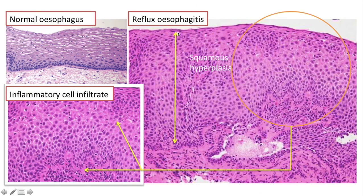Microscopically, reflux esophagitis shows squamous hyperplasia — thickening of the epithelium. Compared to the normal esophagus, this is markedly thickened. If you zoom into the epithelium and the lamina propria, you will find an increase in inflammatory cell infiltrate, which can be neutrophilic in nature, can include eosinophils, and can also be mononuclear cells.